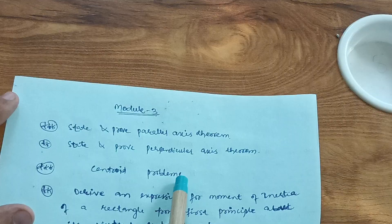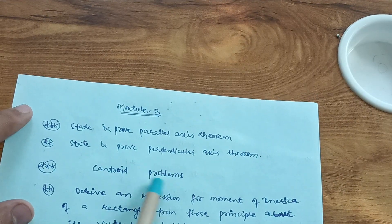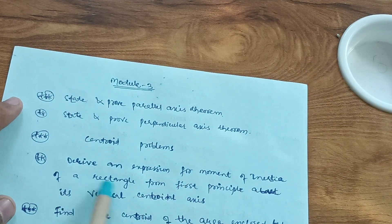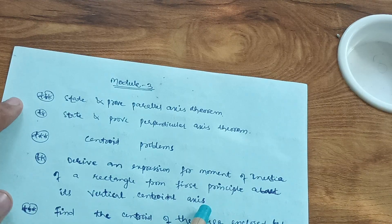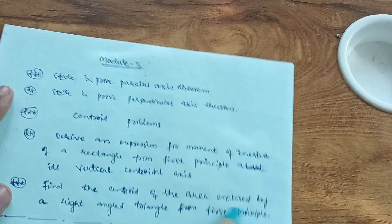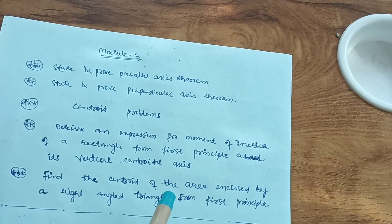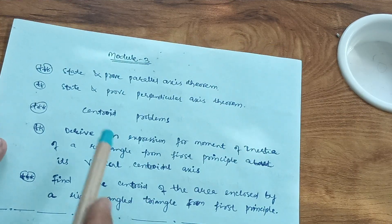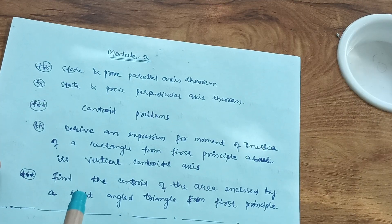acquire or secure 20 marks from this. So you have to go through centroid problems and also derive an expression for moment of inertia of a rectangle from first principle about its vertical centroidal axis, and also find the centroid of the area enclosed by right angle triangle from first principle. These are the theory concepts which you have to cover from module third. Rest of the things are the problems which are on centroid.